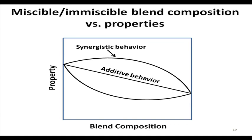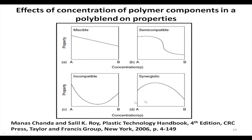We were discussing the effects of concentration of component polymers in a blend on their properties. We are talking about additive behavior, synergistic behavior, and incompatible behavior due to incompatibility of the blends. This can be viewed another way if you look at the diagram — it shows four different cases: one case is miscible, second case is semi-compatible, third case is incompatible, and fourth case is synergistic.